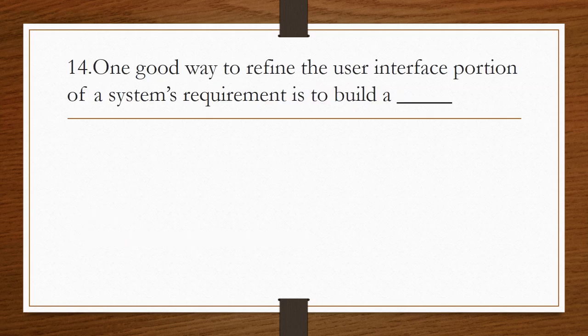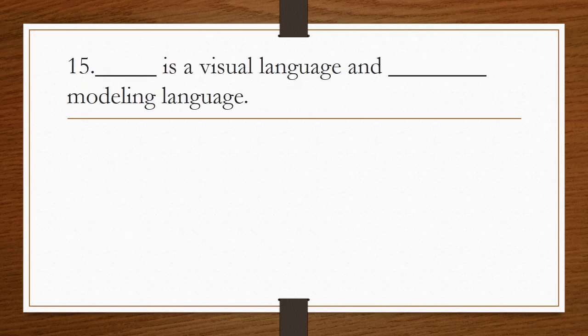One good way to define the user interface portion of a system's requirements is to build a mock-up. Blank is a visual language and blank modeling language. The answer is unified modeling language, that is UML. Unified modeling language is a visual and object-oriented language.